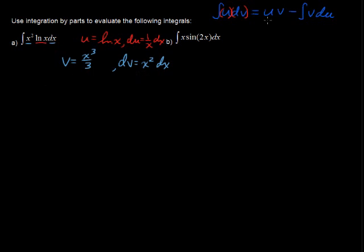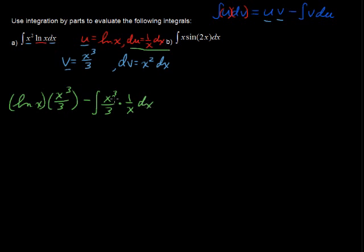Now we're going to follow this form exactly. u times v. So natural log of x times v or x to the third over 3 minus the integral of v du. So v is x to the third over 3, du is 1 over x dx. So that's the process for using the integration by parts. We're not done yet. Now we have another integral to take. But usually this integral is something manageable.